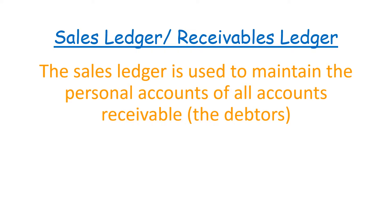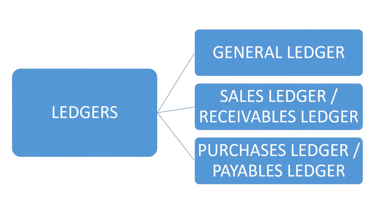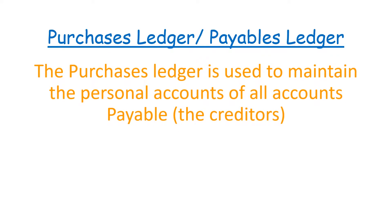Now let's look at what we mean by a purchases ledger, or the payables ledger. A purchases ledger, or a payables ledger, is used to maintain the personal accounts of all accounts payable. If you own a shop that sells merchandise and your suppliers give you goods on credit, it means you're supposed to pay back. In your books of accounts, this kind of person is recorded as a creditor. And because you owe them money, creditors are also referred to as accounts payable, because you are liable to pay them money for having supplied goods to you on credit.